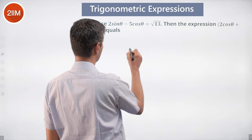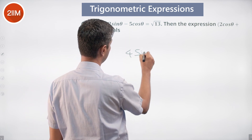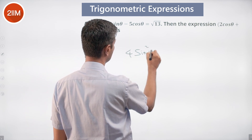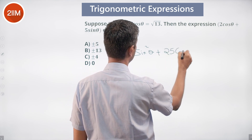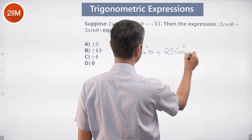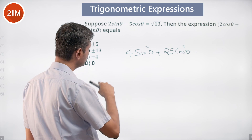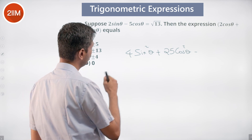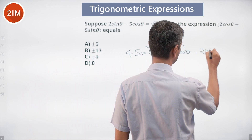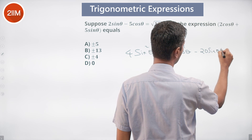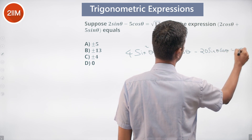2sinθ - 5cosθ squared gives 4sin²θ + 25cos²θ - 2×2×5 = 20sinθcosθ, and that equals 13.